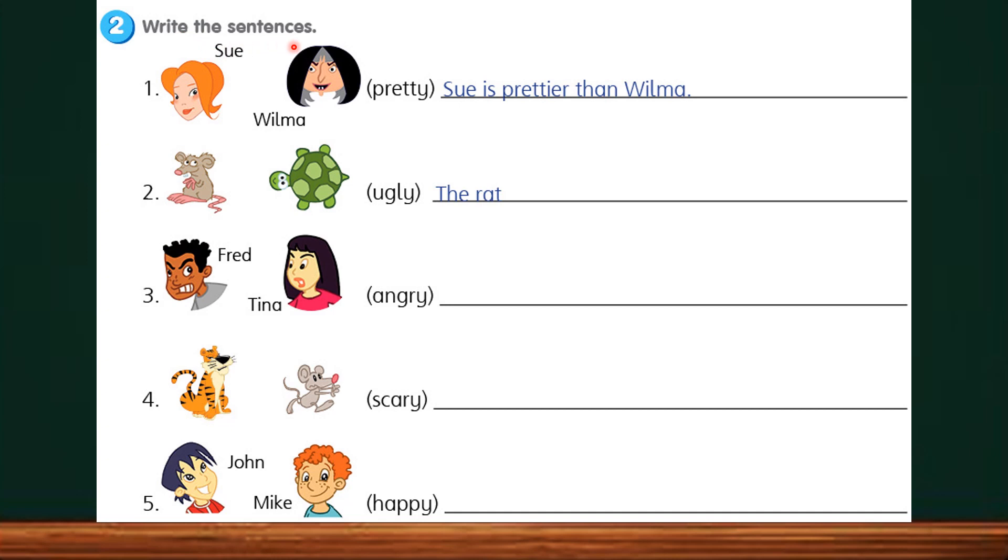Activity 2. Write the sentences. In this activity, we are going to compare two people or animals by using comparative adjectives. The adjectives are provided in brackets. And we have to change the adjective to its comparative form. For example, pretty ends with Y. We have to remove the Y and change it with IER. So pretty becomes prettier. Sue is prettier than Wilma.